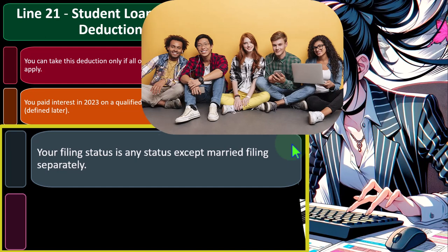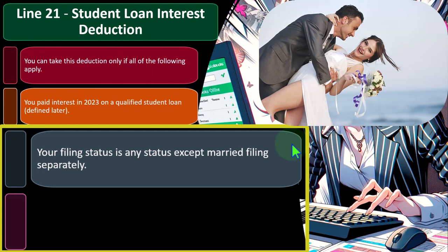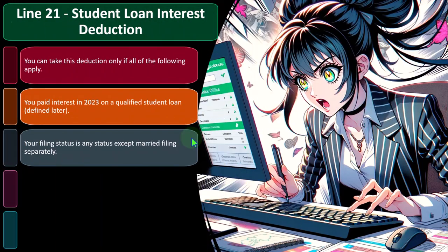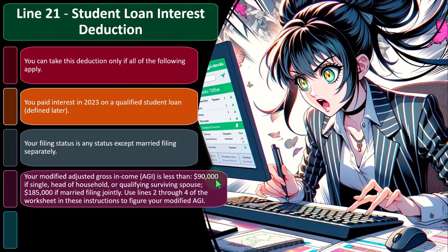Filing status can be any status except married filing separately. Remember that married filing separately is usually viewed with skepticism by the IRS, which may limit deductions for it because they're skeptical that people will abuse the ability to file married or separate and take advantage of certain phase-outs.